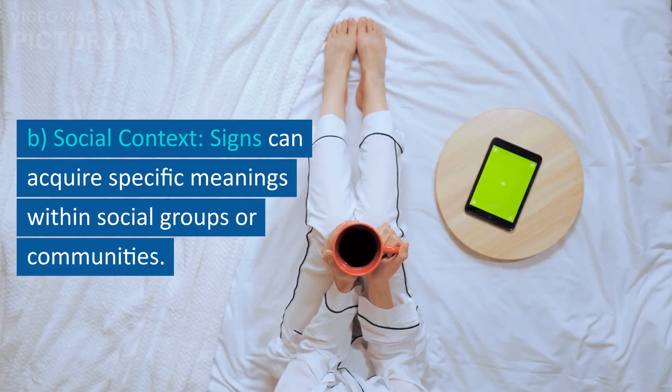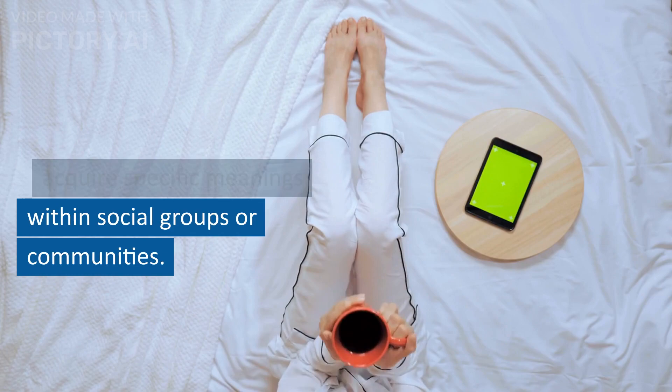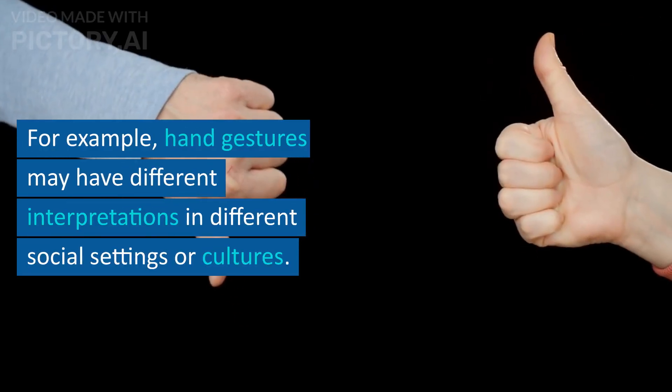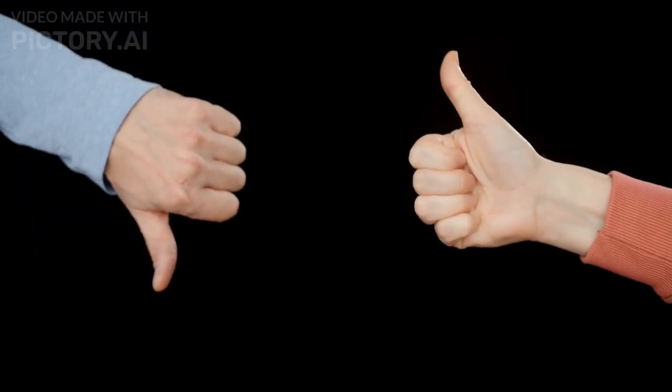Social context: Signs can acquire specific meanings within social groups or communities. For example, hand gestures may have different interpretations in different social settings or cultures.